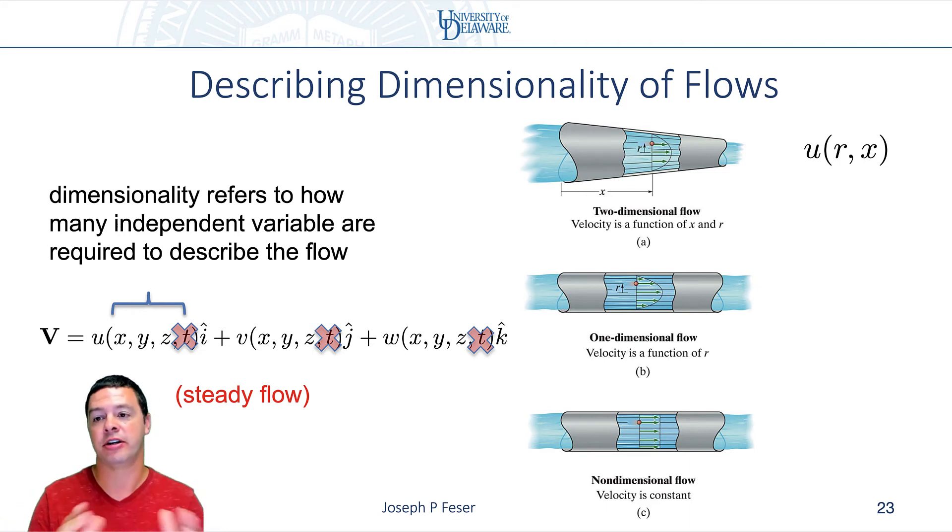So if I go from one x position to another one farther down the pipe, perhaps the flow has accelerated and the velocity has changed. But it's only a function of x and maybe the radial position, as opposed to being a function of all three coordinates.